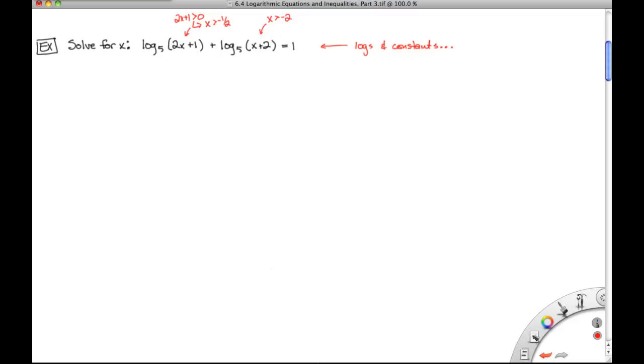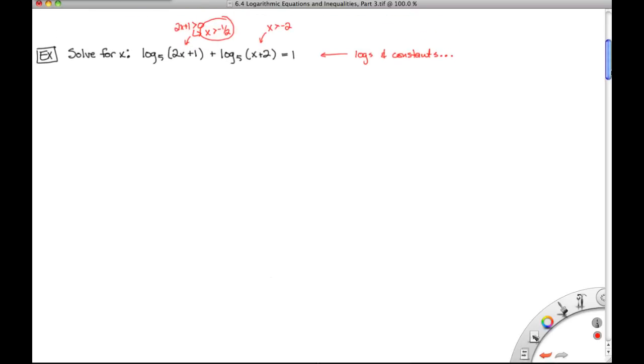And if we look at which one sort of is in charge for this one, we will pick that x has to be greater than negative 1 half. This is the most restrictive of the two restrictions that we're looking at. All right. So with those two bits of information, now let's go ahead and move on to our solution.